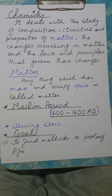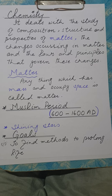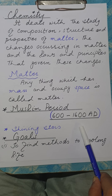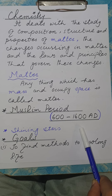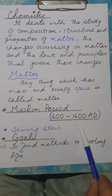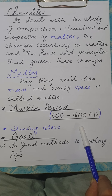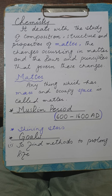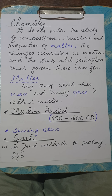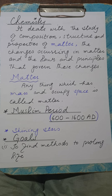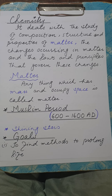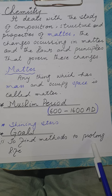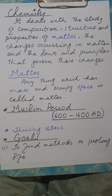If you go into the details of chemistry, you will see that before the Muslim scientists, theoretical work was mostly done. The Muslim scientists proved their work through experiments. They had well-equipped labs and instruments. The first contribution of Muslim scientists was to find methods to prolong life — meaning they did a lot of work related to human life, diseases, and medicines.